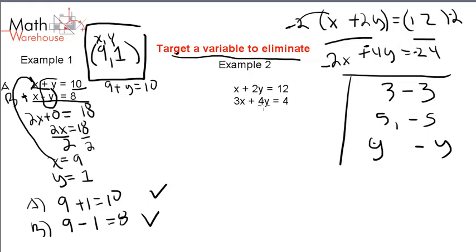Neither one of these in and of themselves is an additive inverse. However, remember, we can multiply both sides of our equation by any number and get an equivalent valid equation. If we multiply the top by negative 2, we get negative 2x, negative 4y. And negative 4y and 4y do indeed add up to 0 and help us eliminate the y variable.